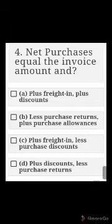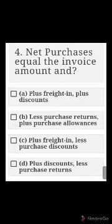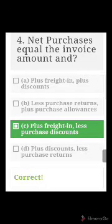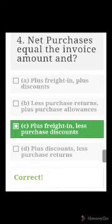Number four: net purchases equals invoice amount — A) plus freight in plus discount, B) less purchase return plus purchase allowance, C) plus freight in less purchase discount, D) plus discount less purchase return. The right answer is C — plus freight in less purchase discount. Freight in is a direct expense so we add it; purchase discount is a contra expense so we deduct it to get net purchases.